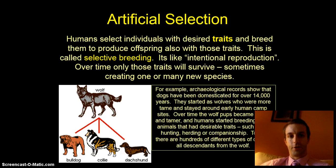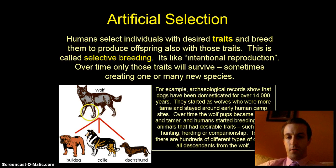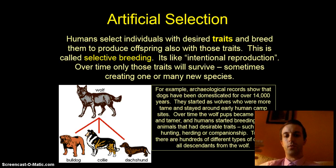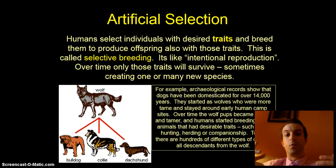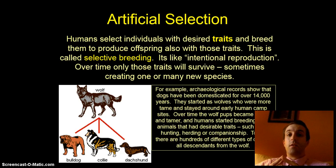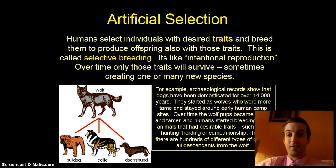That brings us to artificial selection. We talked about this with dogs in class. Dogs have been domesticated for about 14,000 years of human history, and they started off as wolves. Basically all dogs did — they hung around human camps, the humans took them in, and they bred them for certain traits. Maybe they wanted them to hunt well, maybe to herd animals well, or maybe just as companion animals like teacup poodles. Today we have hundreds of different subspecies of dogs that all descended from wolves.